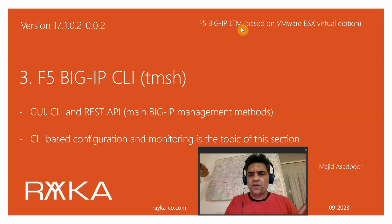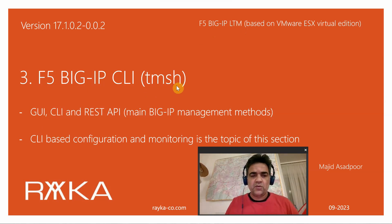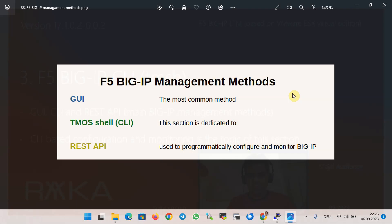Welcome to another video of the F5 BIG-IP LTM course. There are three methods to manage BIG-IP products: the GUI, which is the main method to configure and monitor BIG-IP products; the CLI-based environment or TMOS shell environment, which is the focus of this lesson; and REST API, which is a way to manage and monitor BIG-IP products programmatically. This section is dedicated to the CLI or TMOS shell environment.